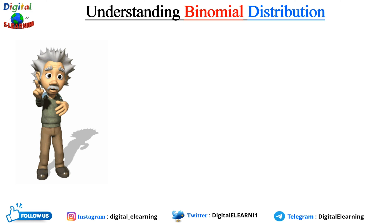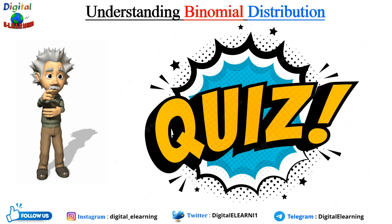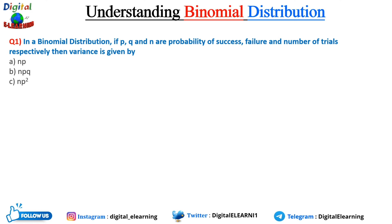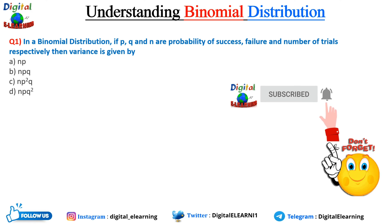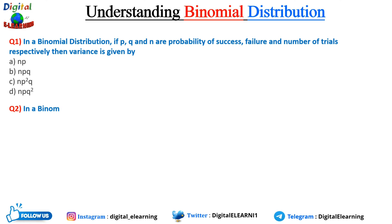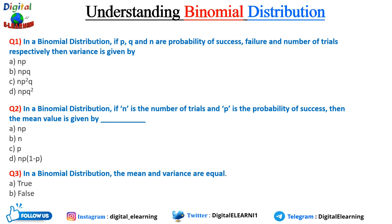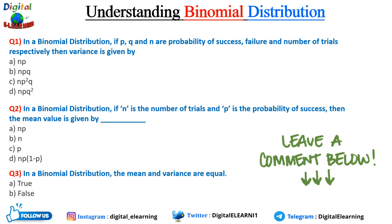Now that you have understood the concept of binomial distribution, let us see how much you know with a small quiz. First: in a binomial distribution, how do you calculate the variance — is it np, npq, np²q, or npq²? Second: the mean value is given by (a) np, (b) n, (c) p, or (d) np(1−p)? Third: in a binomial distribution, the mean and the variance are equal — true or false? Leave your answers in the comments below.